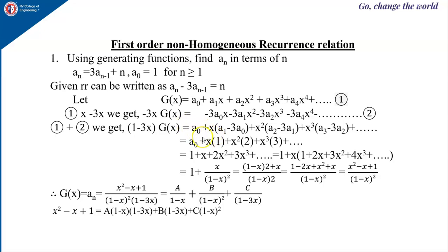Substituting a₀ = 1, we get 1 plus x·(a₁ − 3a₀). By substituting n = 1 in the given recurrence relation, we get a₁ − 3a₀ = 1. Substituting n = 2, we get a₂ − 3a₁ = 2, so the x² term gives 2. Substituting n = 3, we get a₃ − 3a₂ = 3, and so on.